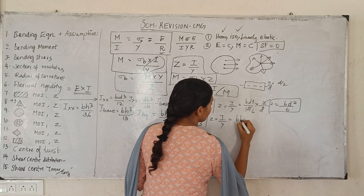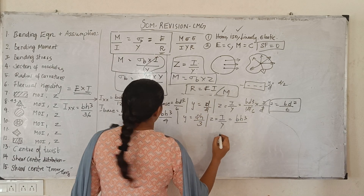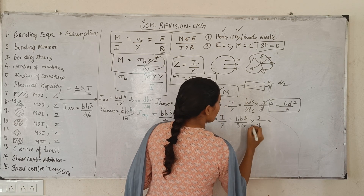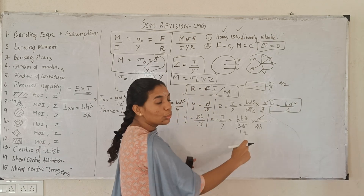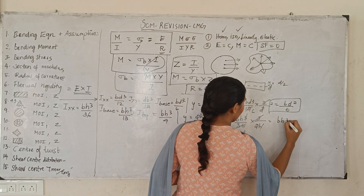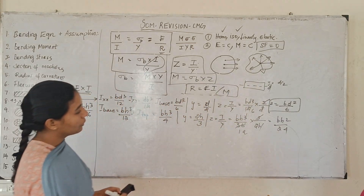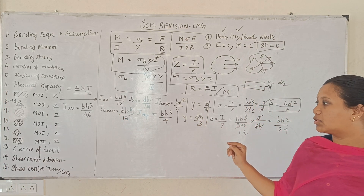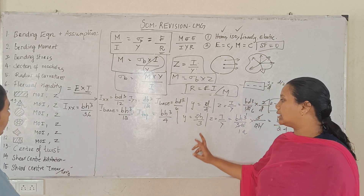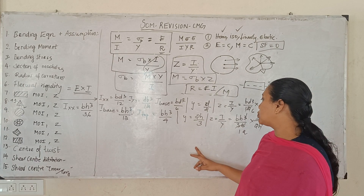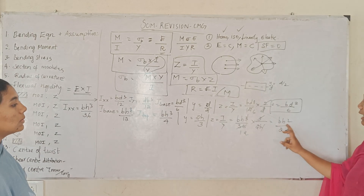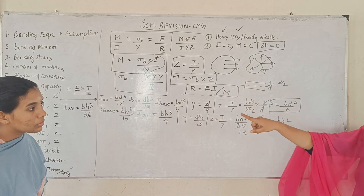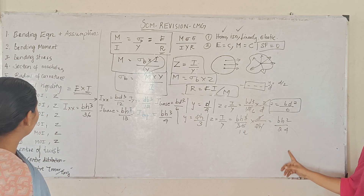Section modulus Z equals I by y. For the triangle: Z equals B·H³/36 divided by 2H/3, which simplifies to B·H² divided by 24. So section modulus for triangle equals B·H² by 24. About the base, I equals B·H³ by 12, and about the x-axis I equals B·H³ by 36.